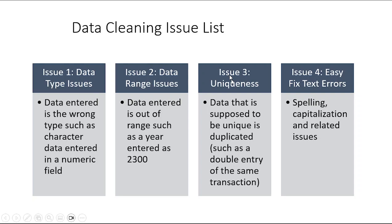A lot of this you can detect with just a basic frequency table. Issue three is uniqueness — sometimes this is a problem and sometimes it isn't. This can happen in sales data where there appears to be a double entry of the same transaction; there should be a unique transaction ID, but it's possible it's a duplicate, or it's also possible somebody actually bought the same thing twice. Issue four is what I call easy text errors — spelling and capitalization issues that occur when you let people type data freely in a form, so they're not all consistent.